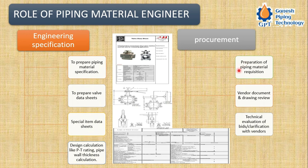Moving to the procurement part: the piping materials engineer prepares the piping material requisition. For example, once the piping material specification is ready, if I need to order ERW (electric resistance welded) pipe from 6 inch to 20 inch with a given schedule, I prepare the entire specification required for procurement of that pipe. This specification is called the piping material requisition, which is then floated to vendors, who provide their quotations with the cost of the given component.